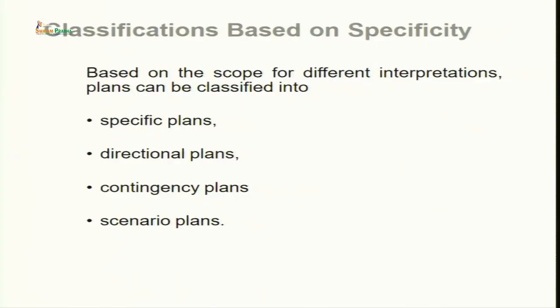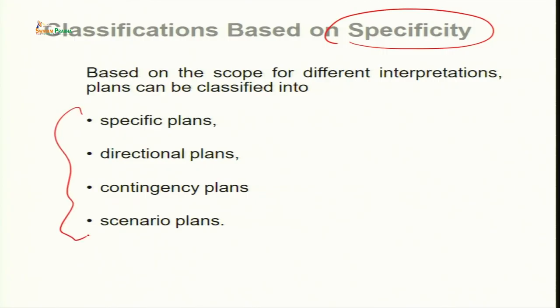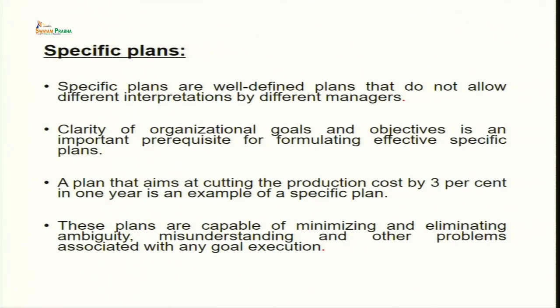The classification of planning based on specificity has four components: specific plans, directional plans, contingent plans, and scenario planning. These are quite interesting plans, and I am sure you will enjoy learning these details.